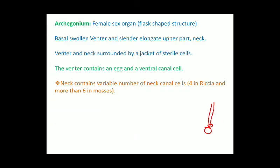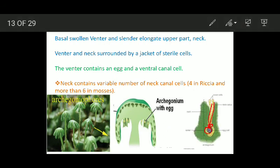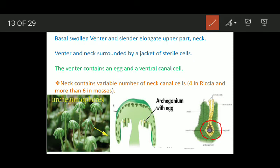Now, what is archegonium? Archegonium is the female sex organ. It is a flask-shaped structure distinguishable into a basal swollen part known as the venter and an upper elongated part known as the neck. The venter and the neck are surrounded by a single layer of outer cells which constitutes the jacket. The venter contains an egg and a venter canal cell.